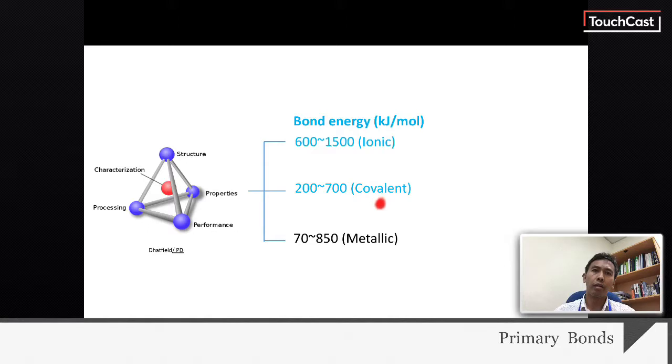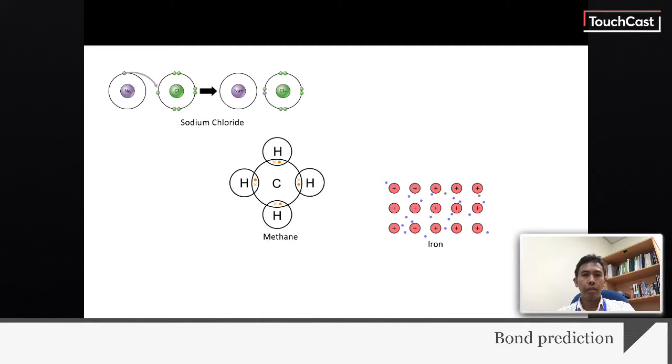However, some metals can also form bonds that are stronger than covalent bonds. Please take note that this bond distribution is only a general one. Let's consider these three: sodium chloride, methane, and pure iron for better understanding of bond prediction.